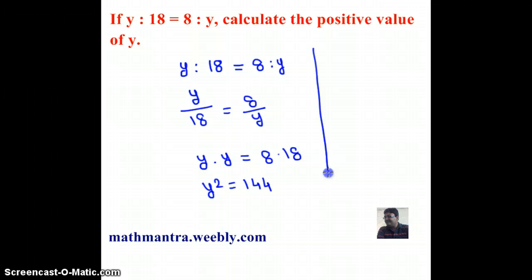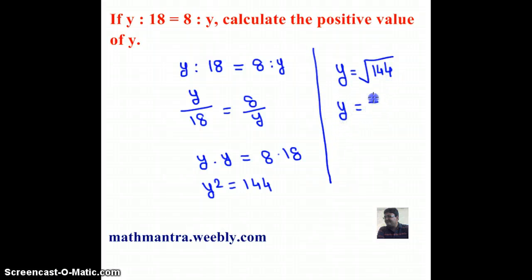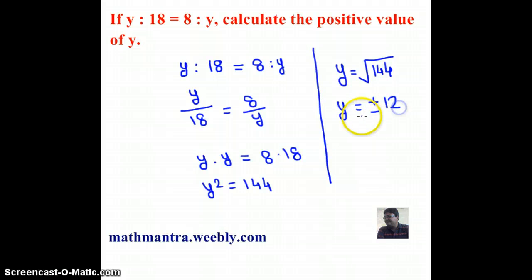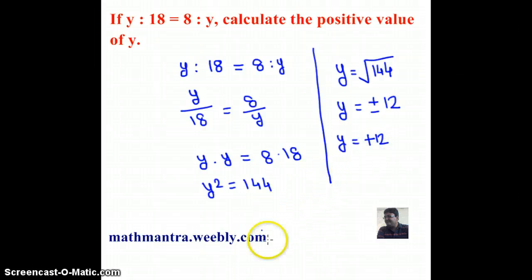So I get y as positive and negative 12, but here we are supposed to only write the positive value of y. So y equals positive 12. Thank you.